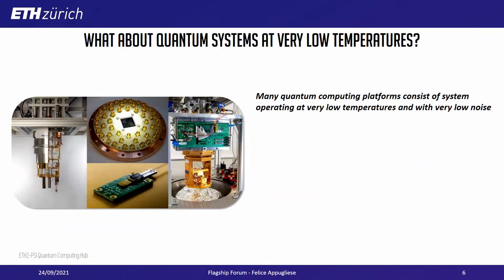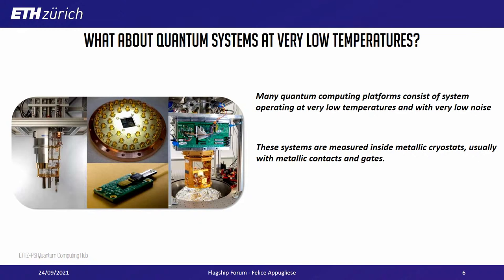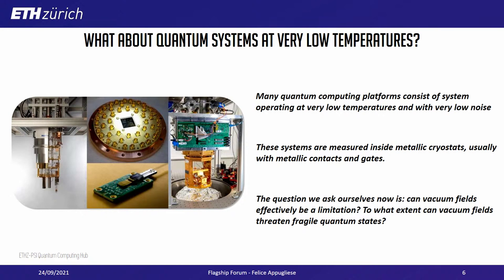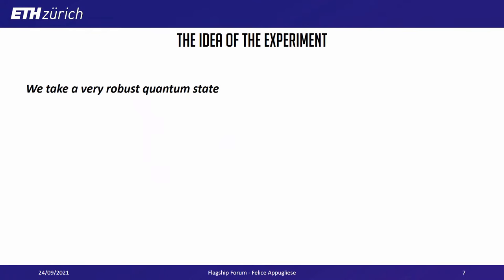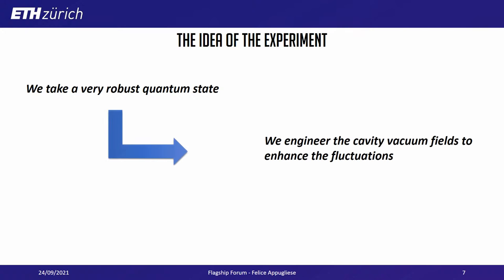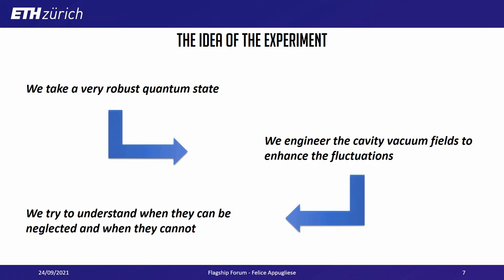The question we can ask ourselves here, in the context of building quantum computers, is this: we operate many quantum computing platforms at very low temperature and with very low noise. In many cases, these systems are also measured inside metallic cryostats with metallic contacts and gates. Can vacuum fields be a limitation for those systems? To what extent can they threaten fragile quantum states, and to what extent can we ignore or neglect them? Our strategy is to take a very robust quantum system, engineer the cavity vacuum fields to enhance the fluctuations, and try to understand whether we are able to actually destroy the system or not.